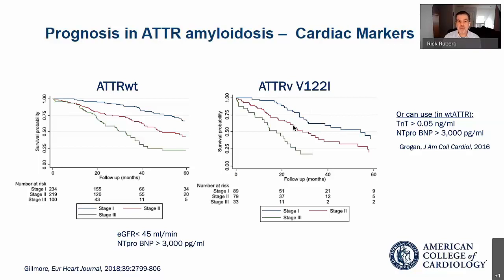The disparity in V122I survival is the subject of rich investigation, as a means to understand whether there is a biological underpinning contributing to the worsening outcomes — an important area that needs to be addressed. These curves do not reflect treatments now available, so for both types of amyloidosis, treatments will extend survival further, as observed in AL amyloidosis. Great progress has been made in ATTR amyloidosis, when previously these diseases were only treated by liver or heart transplantation. Thank you very much for your attention.